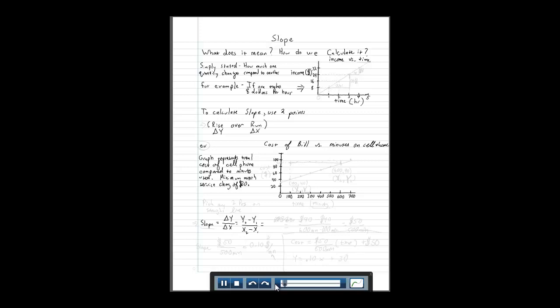Hopefully, these are some examples that you guys may see in real life and you don't even really understand that it's a slope, but in actuality it is. Simply stated, slope is just how much one quantity changes compared to another.